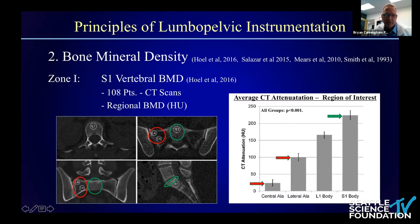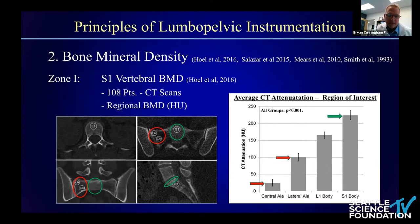If considering fixation at the S1 level, one should think about anterior medial angulation of screws, possible purchase of the superior vertebral end plate at S1, and possibly the sacral promontory — all of which have higher BMDs than other regions.